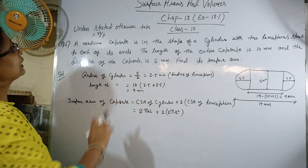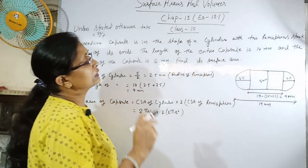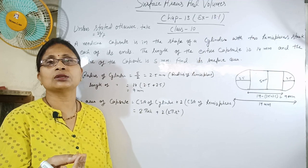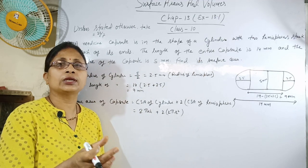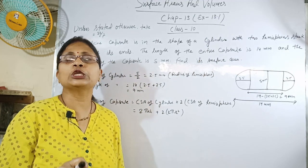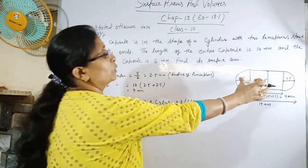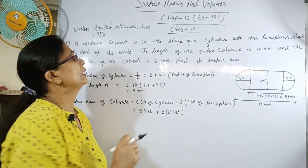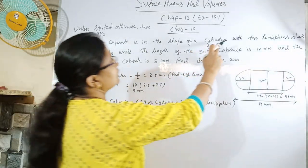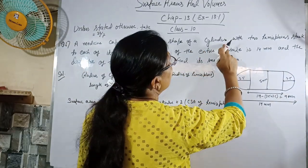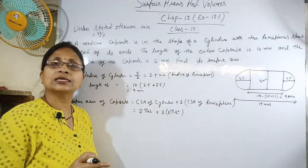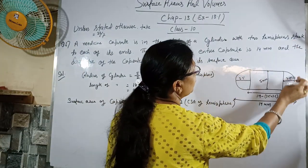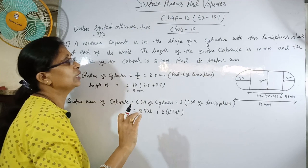Question: A medicine capsule is in the shape of a cylinder. एक capsule है — जैसे आप B complex का capsule use करते हो — उस capsule को आप देख सकते हो, वो इस form में होता है। उसी capsule का हमें surface area निकालना है। Shape of a cylinder with two hemispheres stuck to each of its ends — इसमें एक cylinder और दोनों sides से hemisphere attach होते हैं।